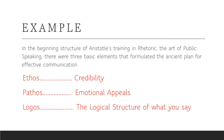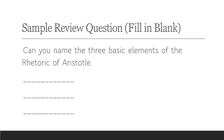For example, in the beginning structure of Aristotle's training in rhetoric — the art of public speaking — there were three basic elements that formulated the ancient plan for effective communication: ethos (credibility), pathos (emotional appeals), and logos (the logical structure of what you say). The quiz question for that would simply be: can you name the three basic elements of the rhetoric of Aristotle? And that would be ethos, pathos, and logos. So you see, the tutorials will give you the answers as you read back through them.